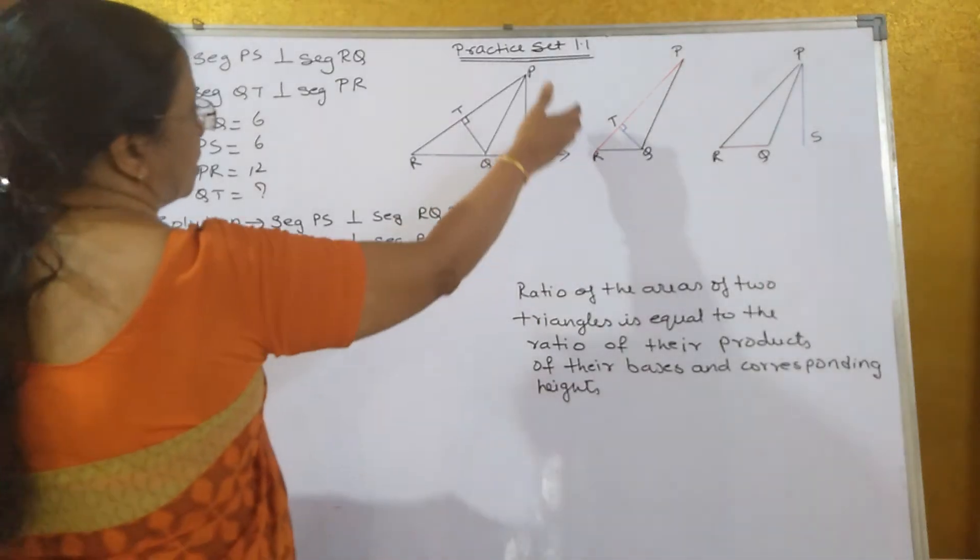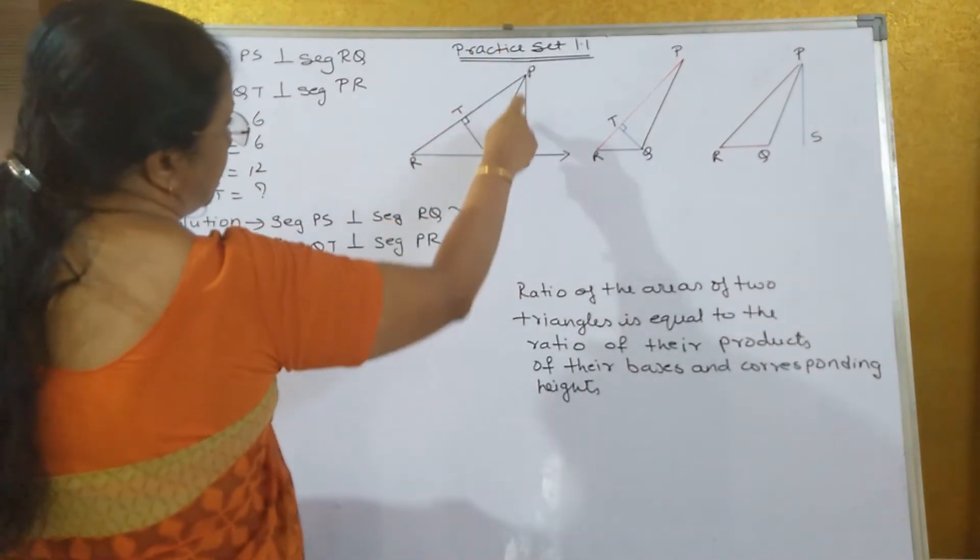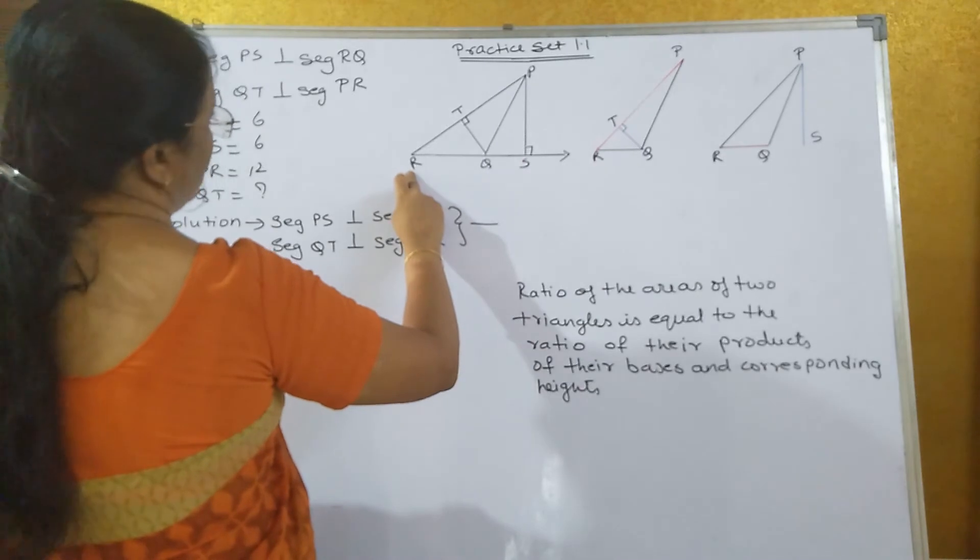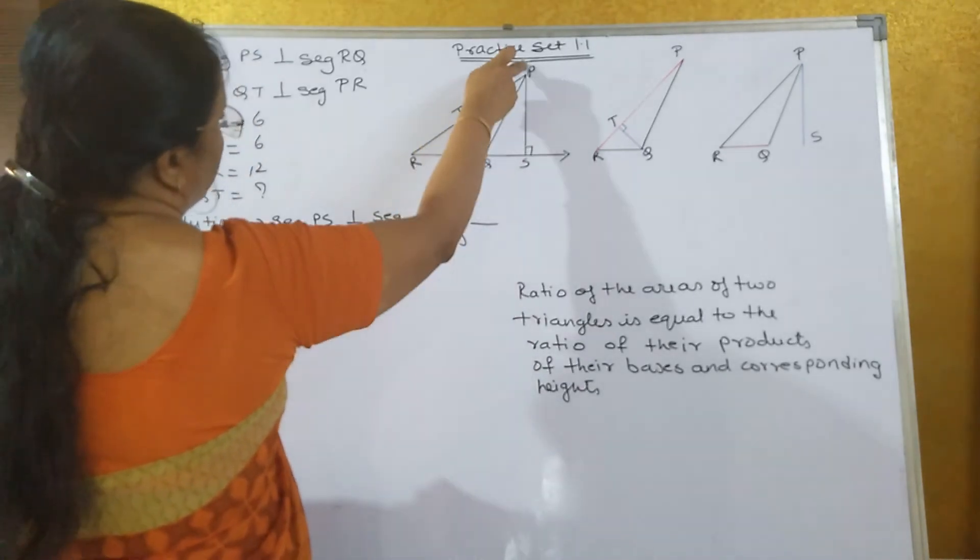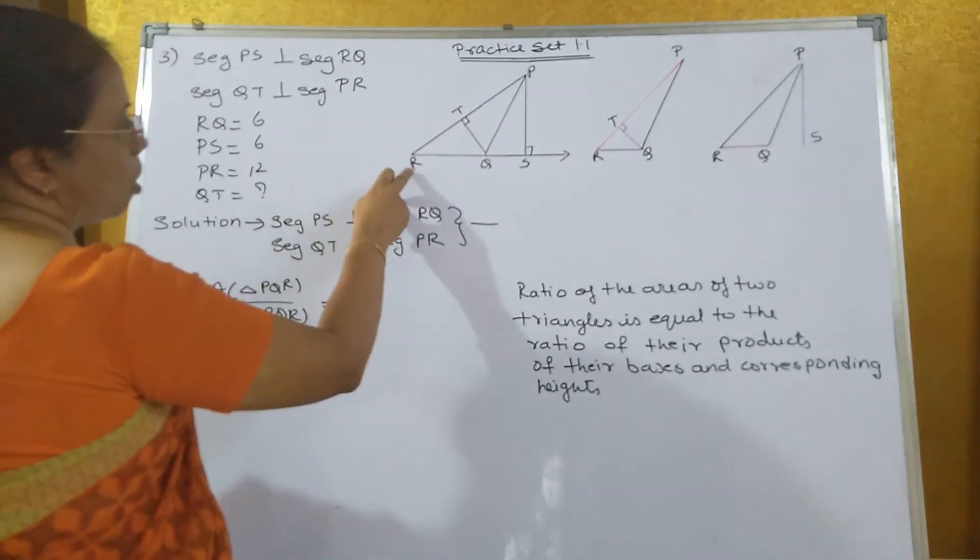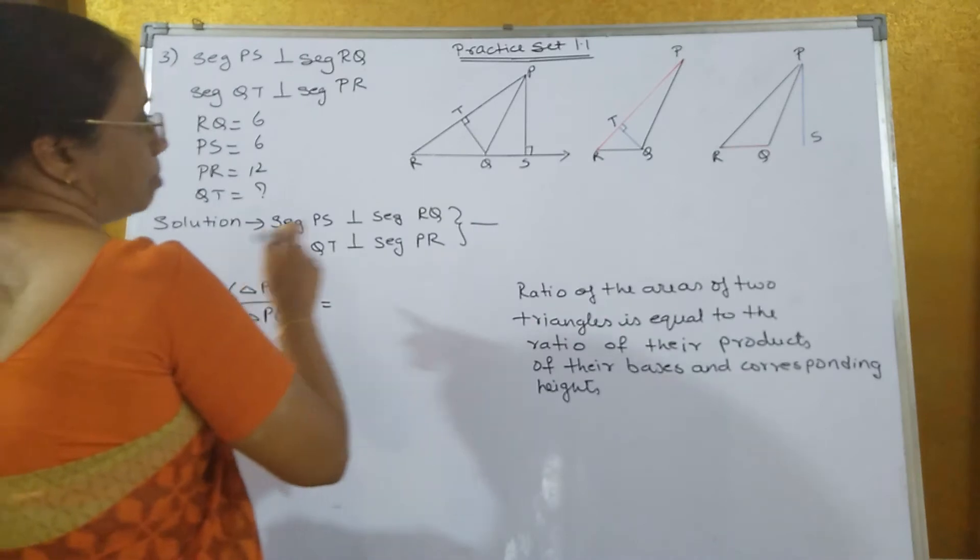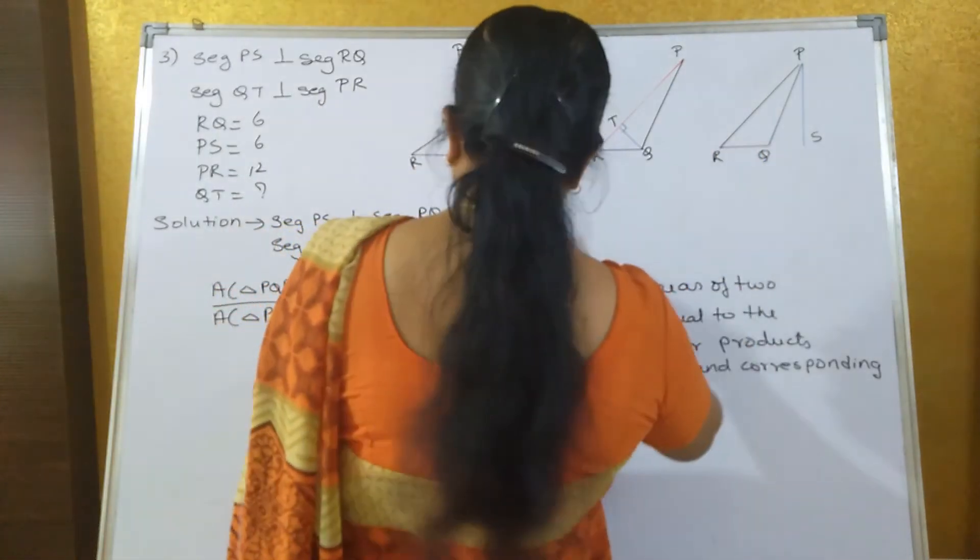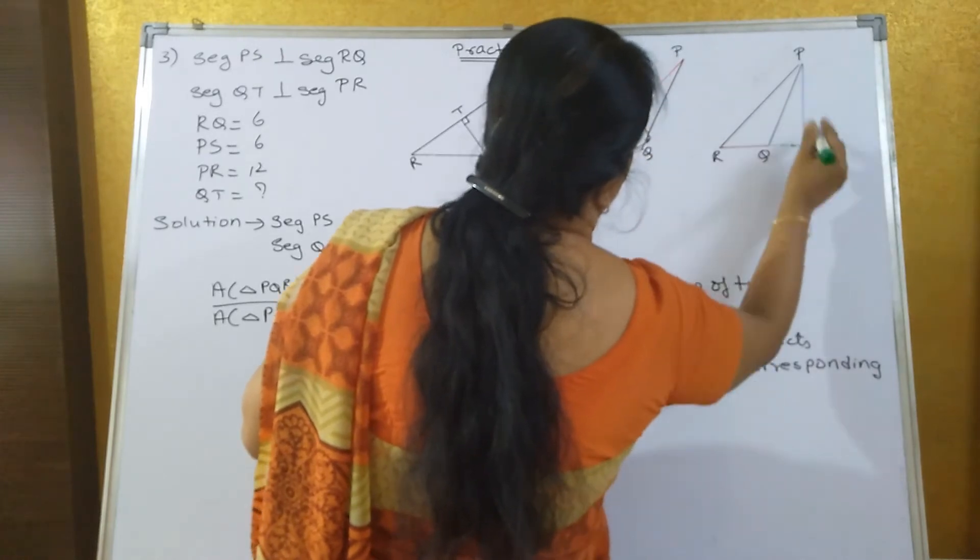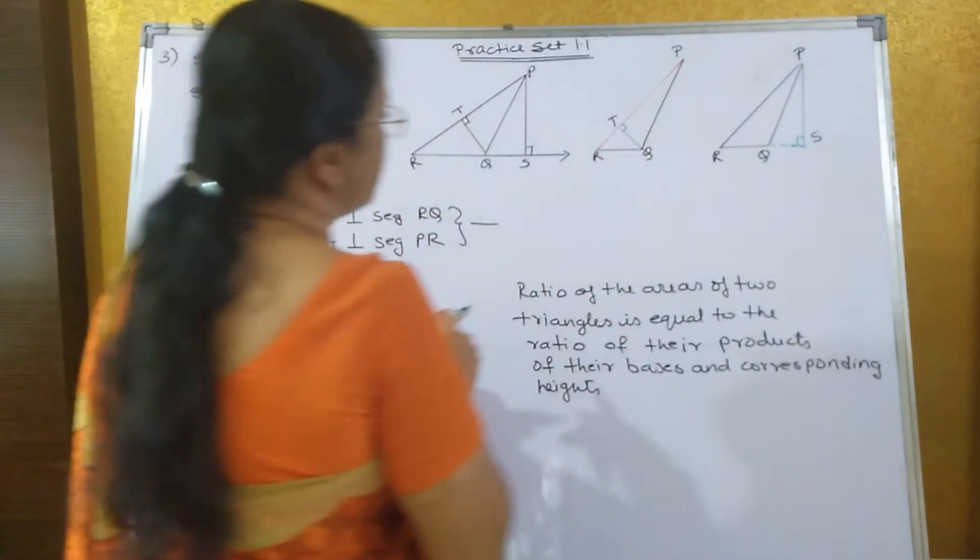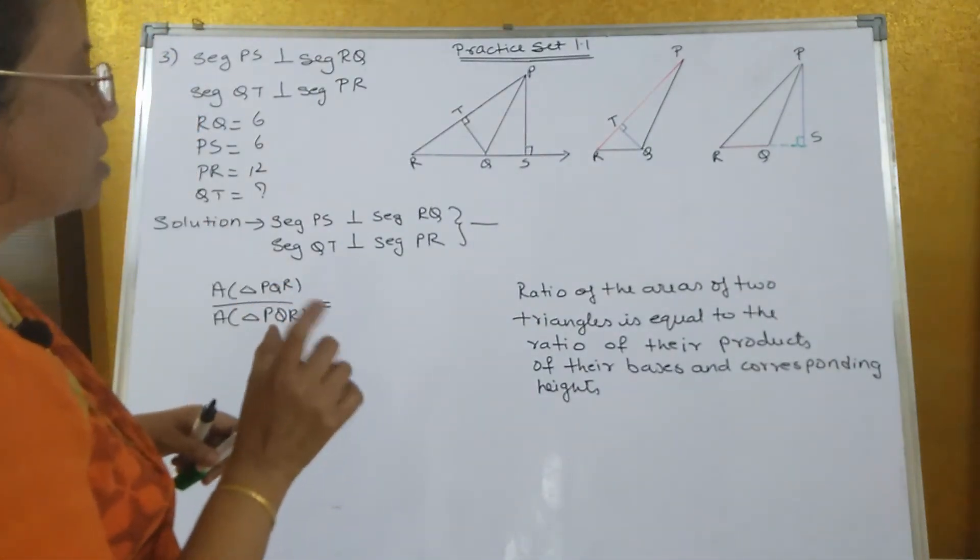Now in this figure, it is given that PS is perpendicular to segment RQ and segment QT is perpendicular to PR. So RQ, only this much is a triangle. QS is an extended part of it, it is not part of the triangle. Just to make the perpendicular fall on that base, we have extended it. RQ is only the base, QS is not the base of that triangle.